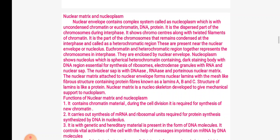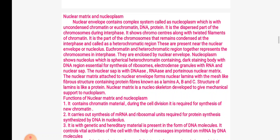Nucleoplasm shows nucleolus, which is a spherical heterochromatin-containing dark-staining body with a DNA region. It is essential for synthesis of ribosomes, granules with RNA, and nuclear sap. The nuclear sap or matrix contains DNAs, RNAs, and proteinaceous nuclear material. The nuclear matrix attached to the nuclear envelope forms the nuclear lamina. The mesh-like fibrous structure contains protein fibers called lamins A, B, and C.